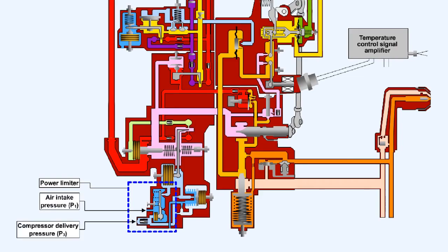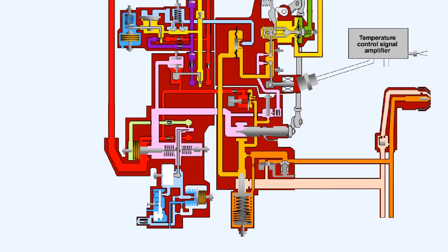The power limiter receives signals of both intake pressure P1 and compressor delivery pressure P3. The ratio of P3 pressure to P1 pressure can be found by combining these signals. A system of capsules and levers controls the fuel flow to the engine so that a maximum pressure ratio is never exceeded, and thus the integrity of the compressor casing is retained.